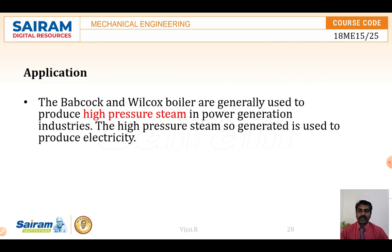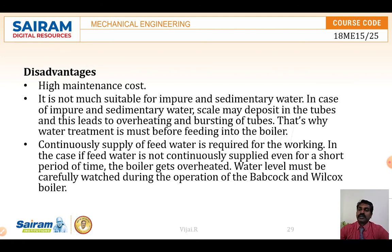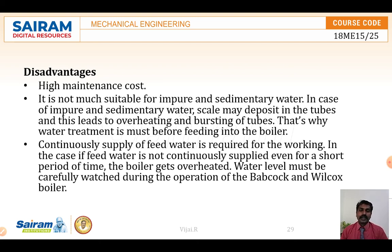The Babcock and Wilcox boiler is mainly used in industries requiring high pressure steam, particularly in power generation for producing electricity in thermal power stations. A disadvantage is that it is not suitable for impure or sedimentary water — water must be purified. Scale deposits can form inside the pipes, causing damage and restricting water flow. Therefore water treatment is important, and a continuous supply of feed water is required to prevent boiler damage.